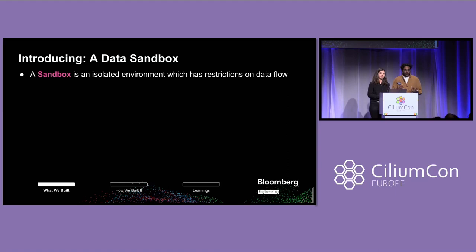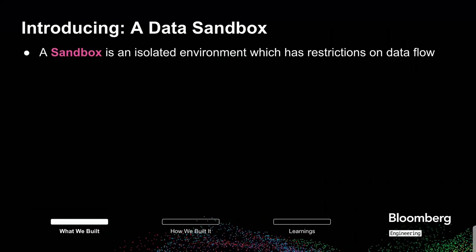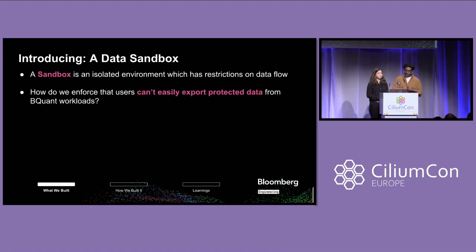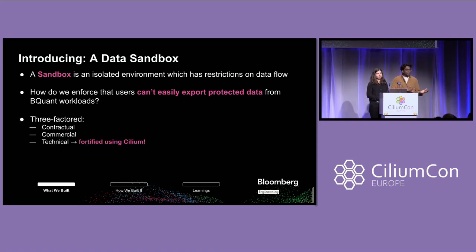We need to create something called a data sandbox. All that means is a way to launch Jupyter workloads that have broader access to data, but a more limited scope on how they can use that — which includes things like data flow and data distribution. So the question is: how do we enforce that users can't easily export protected data from these BQuant workloads? There's a contractual element, a commercial element, and the technical component in which we fortify our network using Cilium.